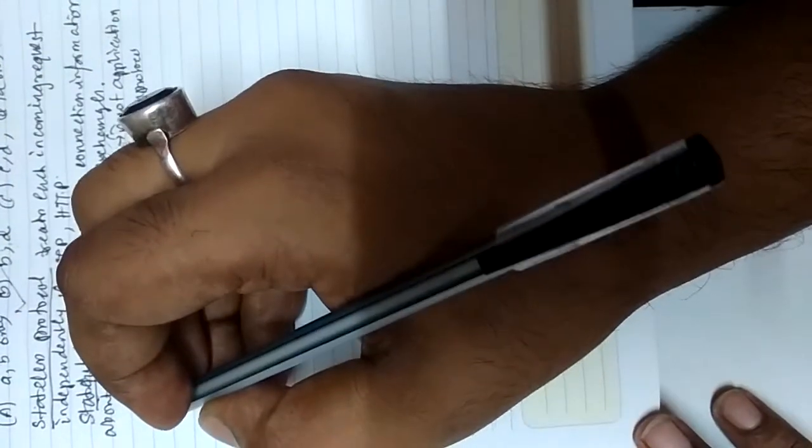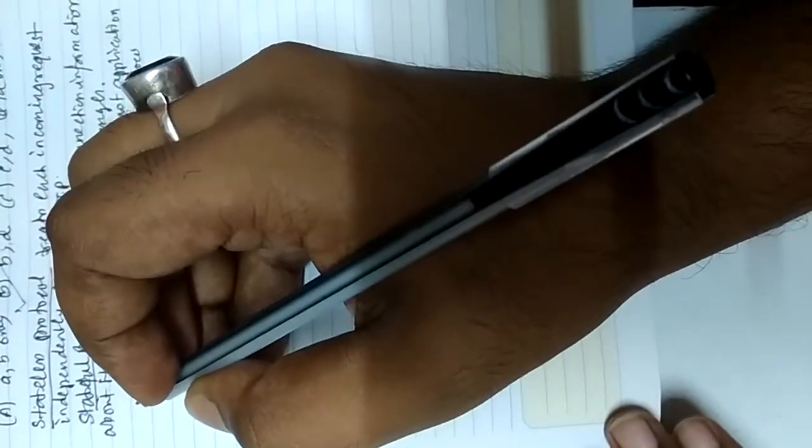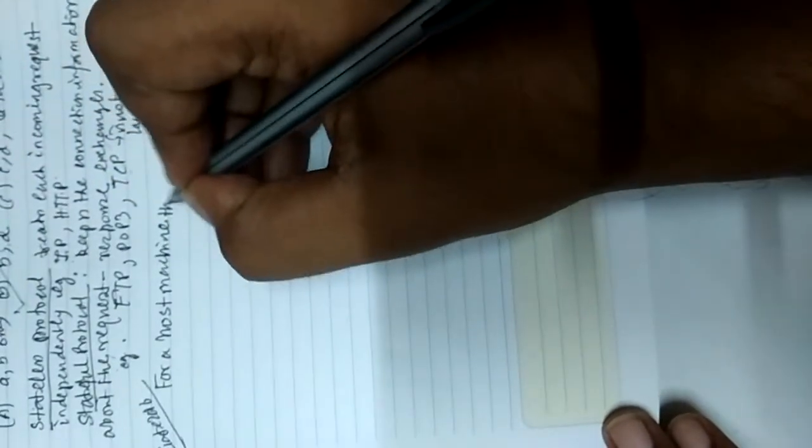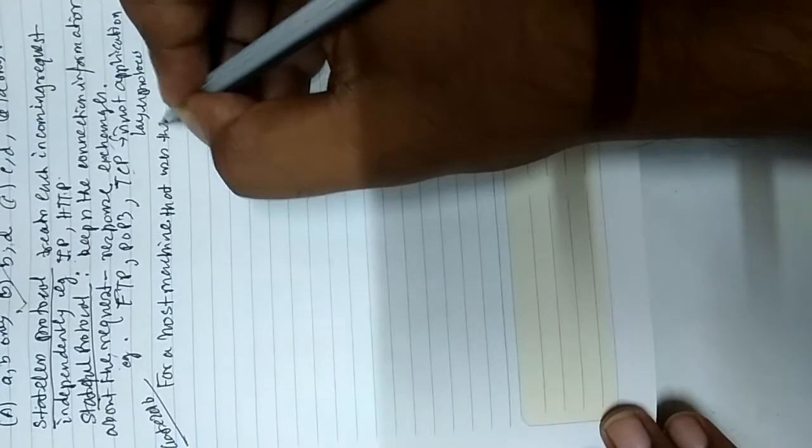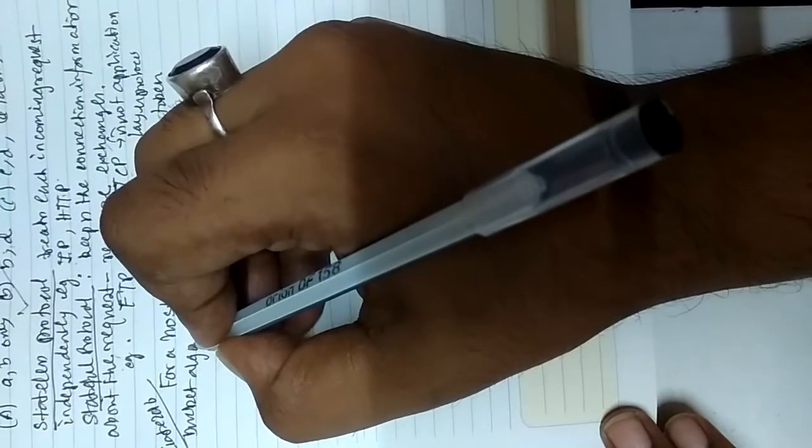In this lecture we will try to solve a few GATE questions on computer network from 2016. So GATE 2016, the question is given like this: for a host machine that uses the token bucket algorithm for congestion control.